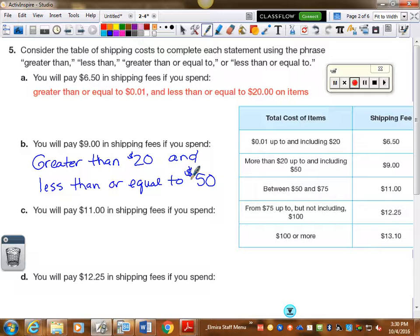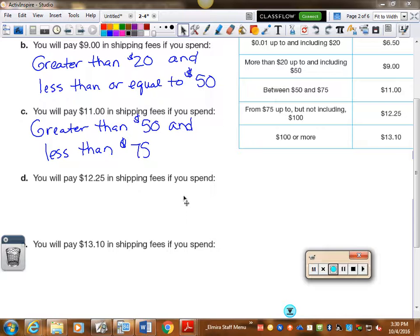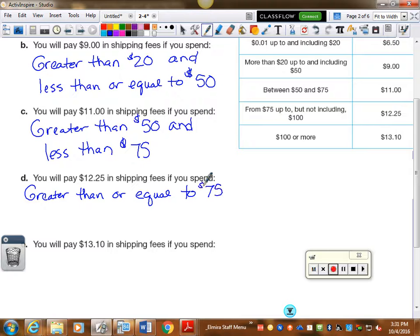So part B, you will pay $9 in shipping fees if you spend, so instead of saying more than $20, we're going to say greater than $20 and less than or equal to. It said up to and including $50. So we would say less than or equal to $50. So we're just translating the wording from the chart to using the wordings of greater than or less than. Because then, when we translate that wording, then we can write it as an inequality. You will pay $11 in shipping. It says in words between $50 and $75. So if it's greater than $50 and less than $75. Let's move down D. You will pay $12.25 in shipping if it is greater than or equal to $75 and less than, but not including. So I don't say less than or equal to, just less than $100.